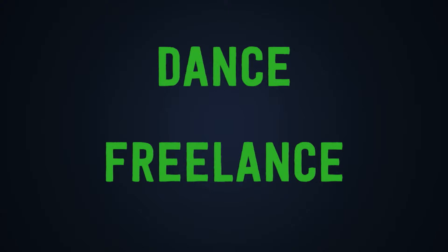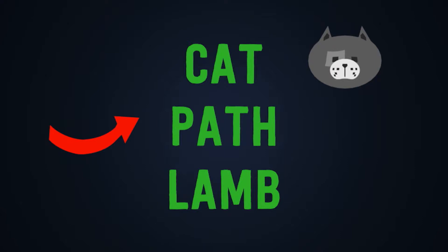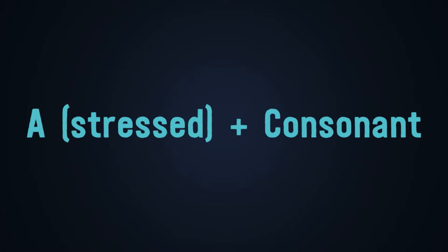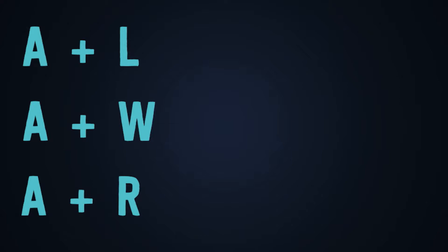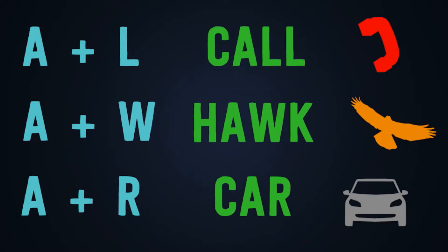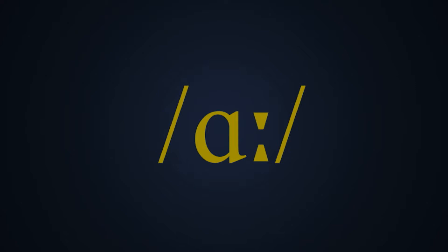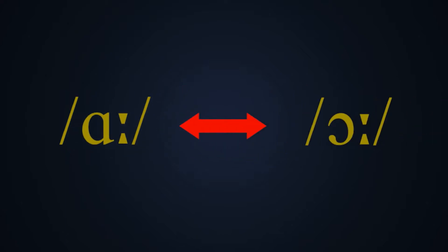Those are not the only words that can be exceptions, but if you have any ideas of some, please share them in the comments. Number two: when letter A sounds 'æ'. Check the following words: cat, path, and lamb. This happens when the letter A is stressed and followed by a consonant. The tendency is to pronounce letter A as 'æ'. There are some exceptions — when letter A is followed by L, W, or R, as in: call, hog, car. Note that the sound 'ɑː' produced in these patterns can also sound like 'ɔː' depending on the dialect and where English is spoken.